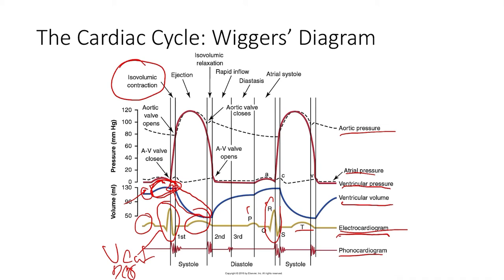Once enough pressure builds in the chamber, ejection occurs — volume decreases as blood is pumped out. Then we reach isovolumetric relaxation, where the heart begins to relax, the aortic valve closes, and the AV valves will eventually open after a brief delay as the heart unwinds. That unwinding creates a suction effect that helps the AV valves open, producing rapid inflow, followed by passive filling as the cycle returns to the beginning.